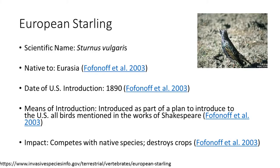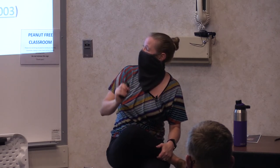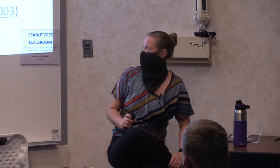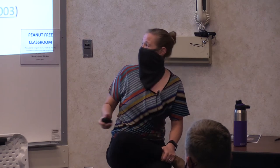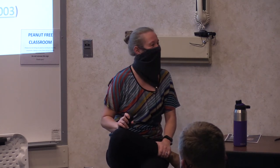One of my favorites to talk about: the starling. It's everywhere — so widespread in the United States. The reason it got here is because people wanted to bring over from England every species of bird mentioned in the works of William Shakespeare. They were settling a new area and wanted to bring things meaningful to their culture. Except that it out-competes native species — most native songbirds — and can have a really big impact on crop species. That's one of my favorite reasons for introduction — I just think it's silly.